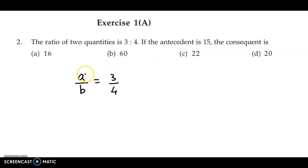Antecedent, that is A, is 15. Then the consequent, that is the value for B, is how much? So we have 15 upon B is equal to 3 by 4.